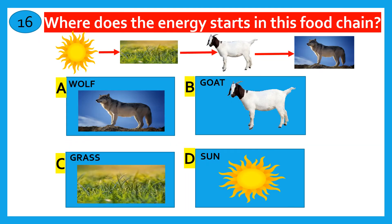Where does the energy start in this food chain? Wolf, goat, grass, sun? The correct answer is sun.